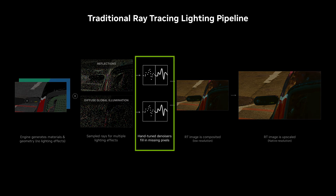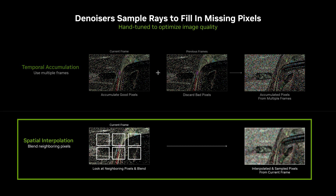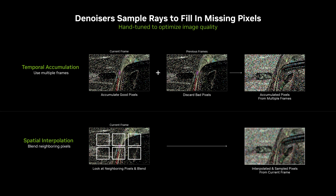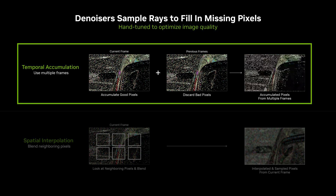Even offline ray tracers have to deal with this problem, and we do this by using denoisers. There are multiple kinds of denoisers for every frame that are combining information across pixels in the frame by blending them together, and across multiple frames by accumulating information in order to come up with our best estimate of how the scene looks.